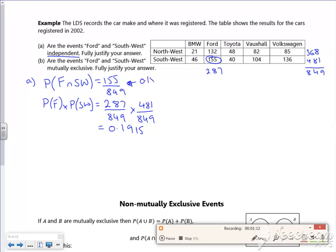So they're not the same. The probability of F and Southwest is not equal to the probability of F times the probability of Southwest. So therefore they're not independent. Mutually exclusive, right, so let's look at mutually exclusive.